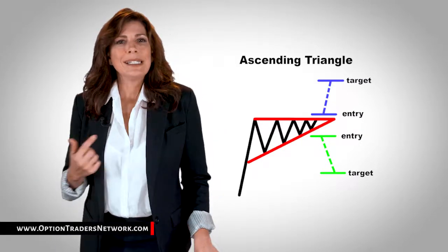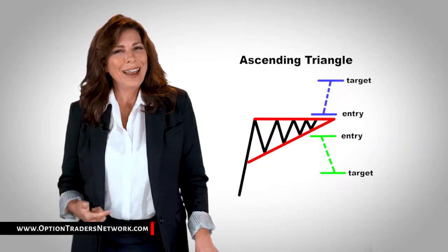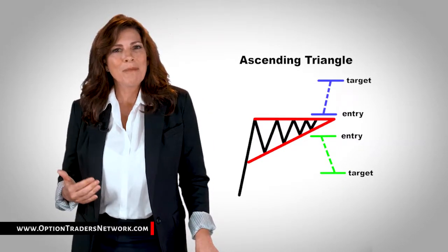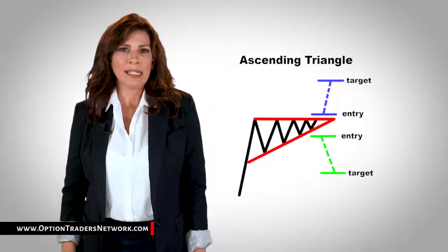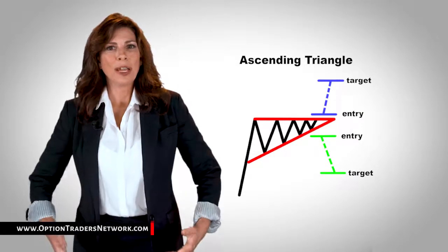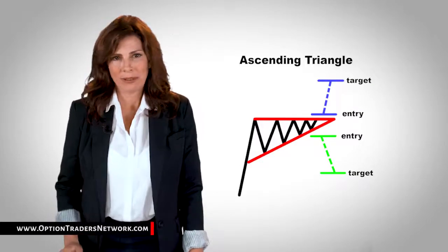In the chart above, you can see that the buyers are starting to gain strength because they're making higher lows. They keep putting pressure on that resistance level, and as a result, a breakout is bound to happen.